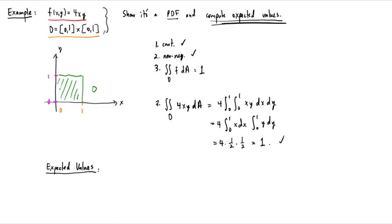The expected values are each going to be equal to, so let's do mu sub x. This is the double integral over the domain of x times f(x,y) dA. This is going to be the integral from 0 to 1, 0 to 1, 4 times x squared times y dx dy.